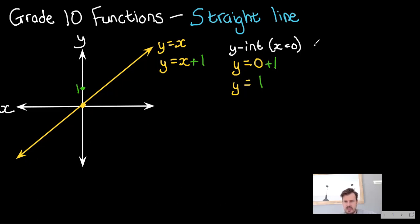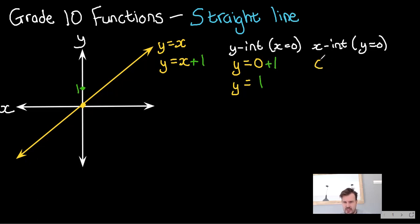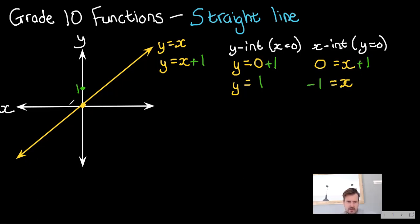To get your x-intercept, you make y equals 0. So you make 0 equals x plus 1. Take the 1 across and you get minus 1, so x equals minus 1 — over here on the x-axis.